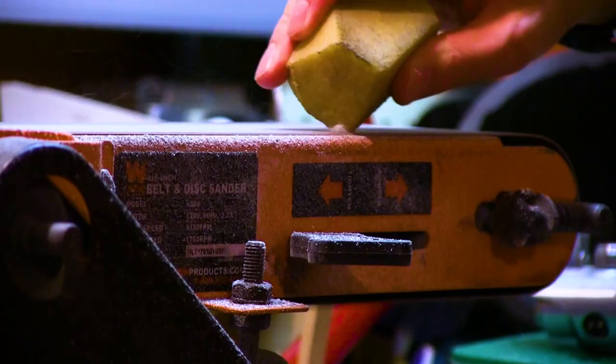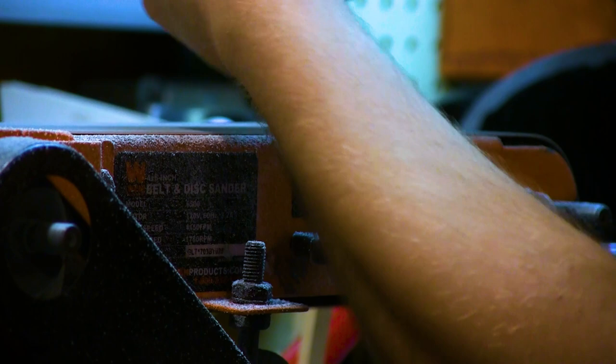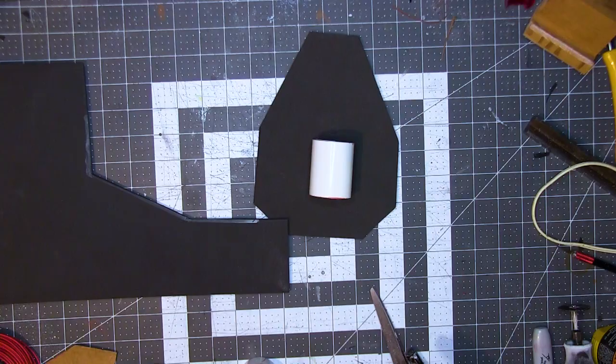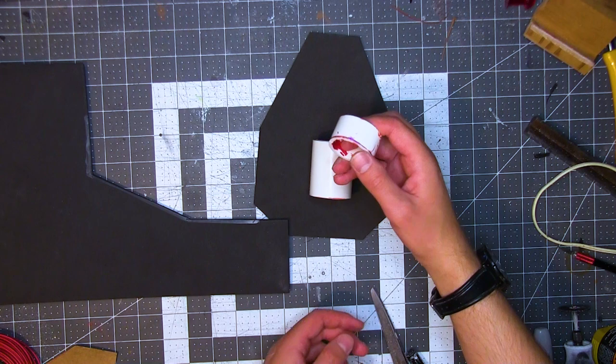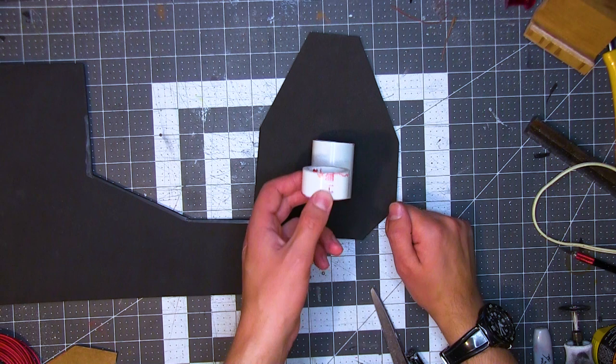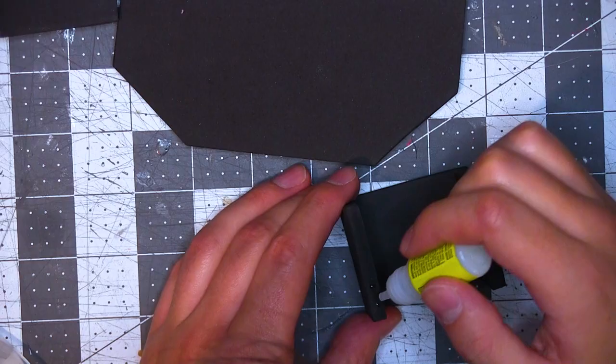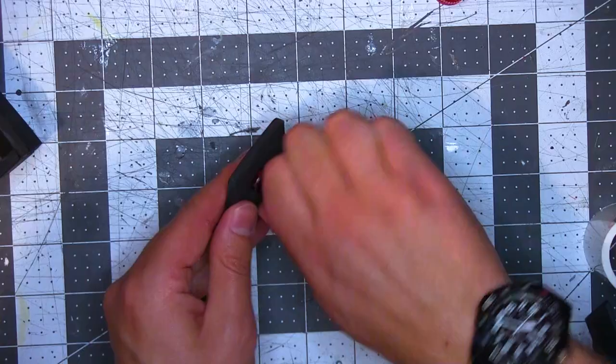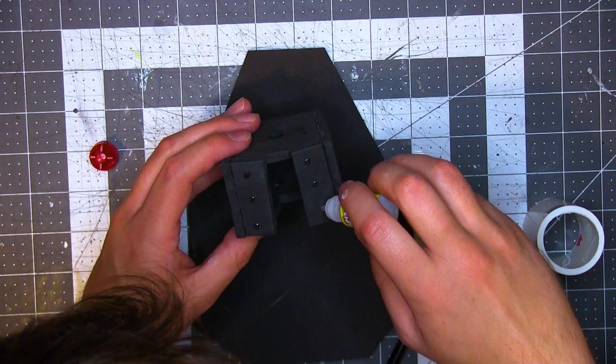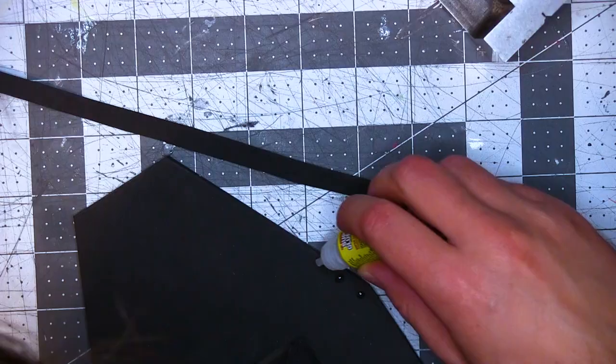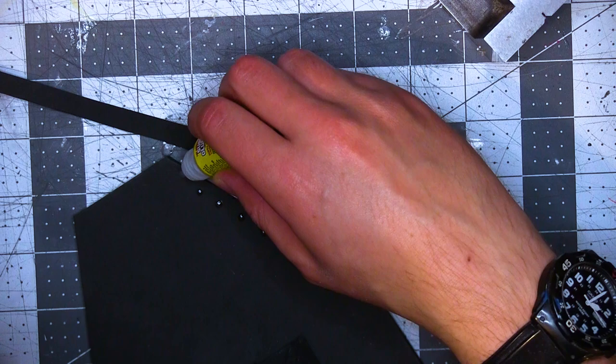Whenever you switch materials that you're sanding you want to clean the belt. I lightly sanded those edges. Now I'm gonna use the scraps to make the little box around the emitter. So I made that out of scrap foam attaching the pieces with super glue. Before attaching the top piece I drilled a hole in it with a pen casing. This will be for the blade later.